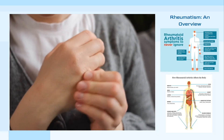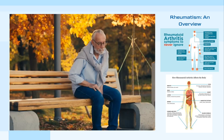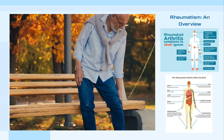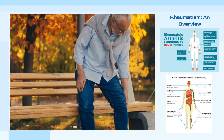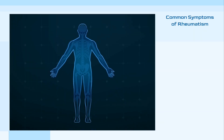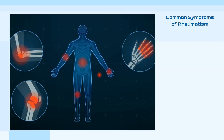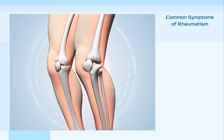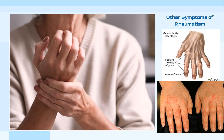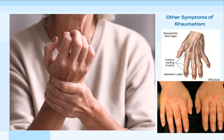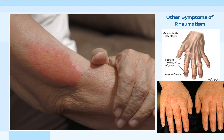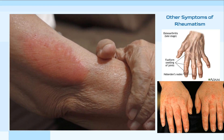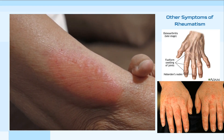Rheumatism encompasses an assortment of conditions characterized by inflammation and pain in the joints, muscles, and fibrous tissue. The symptoms of these rheumatoid diseases can manifest in different parts of the body. Common symptoms include joint soreness, swelling particularly around the joints, muscle and joint stiffness, and difficulty in movement, particularly during the initial hour of the day. Other symptoms include overheating and reddening of the joints, fatigue, a general feeling of malaise, fever, and weight loss. These symptoms vary based on the specific rheumatoid disease — for instance, lupus causes rashes and skin symptoms.